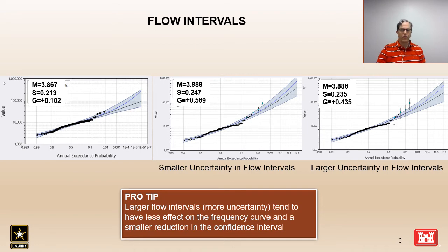Looking at the skew specifically: in the middle plot, given the small uncertainty in the flow intervals, they have a greater influence on the fit of the frequency curve, resulting in the largest skew parameter estimate. In the far right plot we have the same flow intervals but with a wider uncertainty, resulting in less influence and less of a change in the estimated skew parameter.